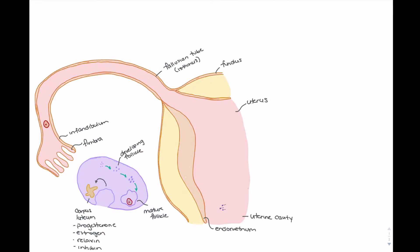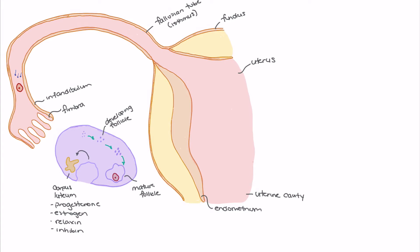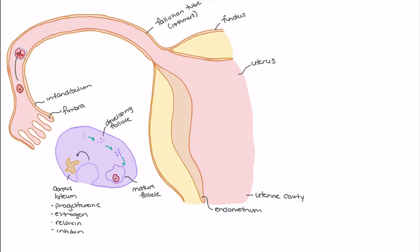After intercourse, sperm enter the uterine cavity and make their way into the fallopian tubes. Generally, fertilization occurs in the outer one-third of the fallopian tube as the ovum makes its way through the infundibulum toward the ampulla. If a sperm is capable of penetrating the ovum and fertilization is successful, we have formation of the zygote.